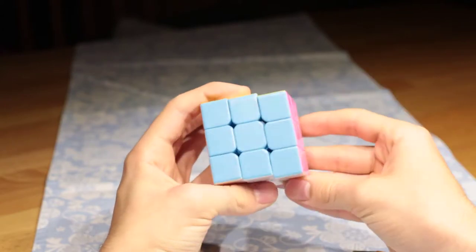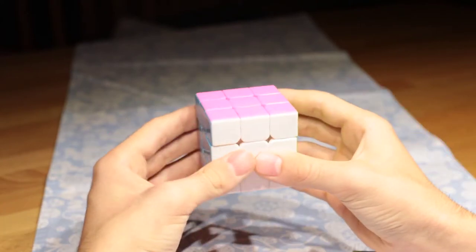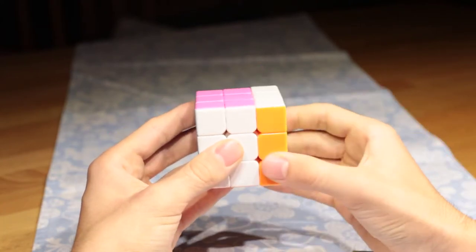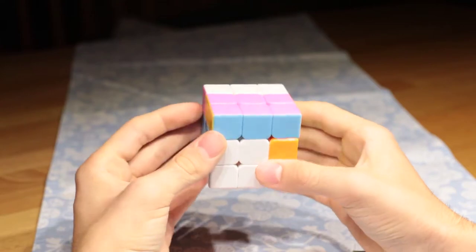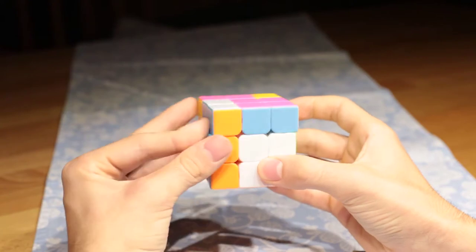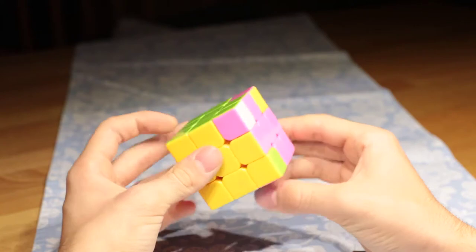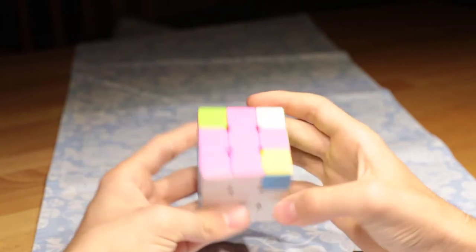If you want to exchange three corners, Niklas is an easy way to do it. Up, right, up, left, down, right, down, left. As you can see, three corners are swapped.